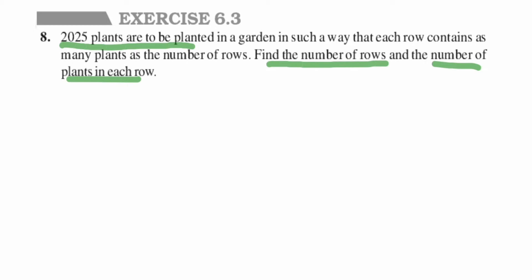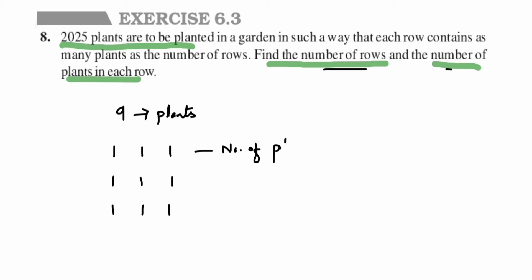Before we solve this, let us take a small example. Suppose I have 9 plants and I want to plant them such that the number of rows equals the number of plants in each row. I can arrange 9 plants into 3 rows, with 3 plants in each row — one, two, three rows, each having 3 plants. So the number of rows and number of plants in each row are the same.